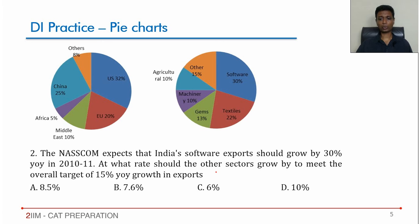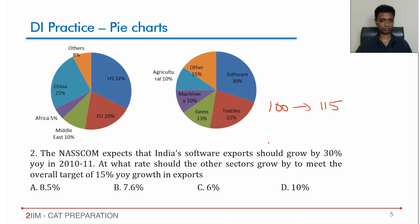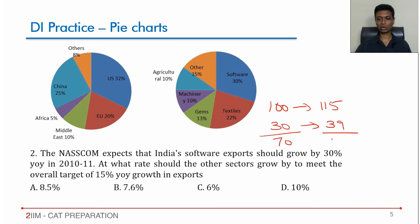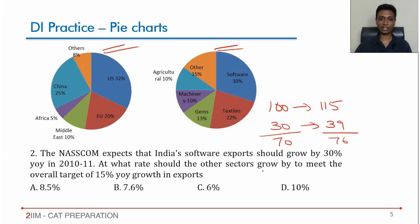NASSCOM expects India's software exports to grow by 30% in 2010-11. What rate should the other sectors grow at to meet the overall target of 15% year-on-year? If we call overall exports 100 units, they expect it to become 115. Software is 30 units and grows by 30%, so 30% of 30 is 9 — software goes to 39. I have completely bypassed the overall number; it doesn't matter whether total exports were 200 billion or any other figure.